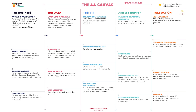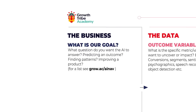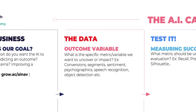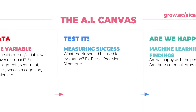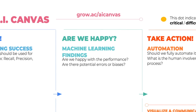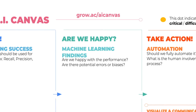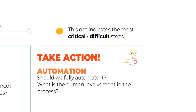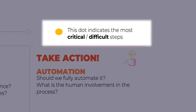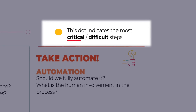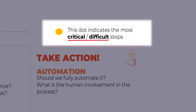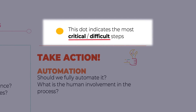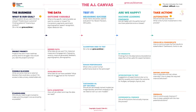Here's a quick overview. The canvas is separated into five columns, which should be covered from left to right. First, the business side of things, then the data, then the actual testing phase right in the middle, next the evaluation phase, and finally the action phase when you have a model worth implementing. We've also added a practical indication of which sections are the most difficult and most important, with a little yellow dot. You'll need to look out for these sections as they're more critical and typically require more time.